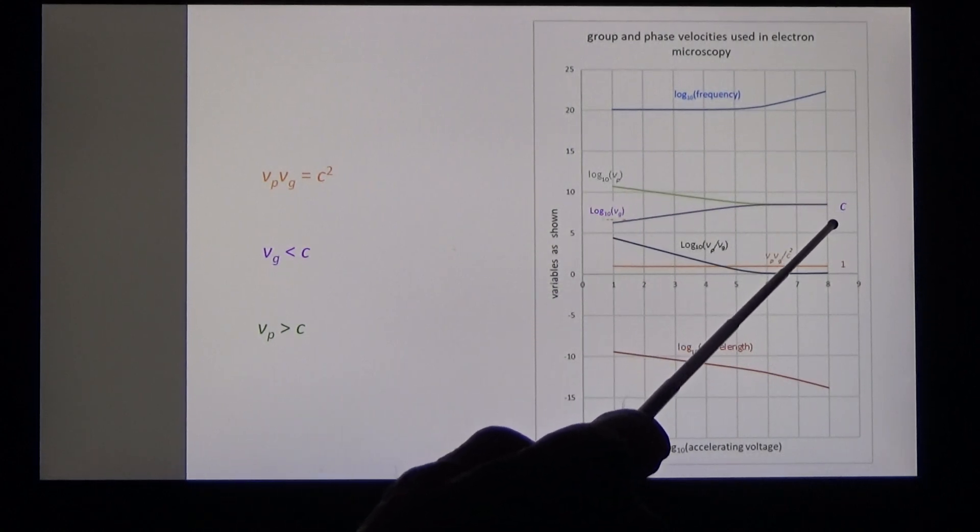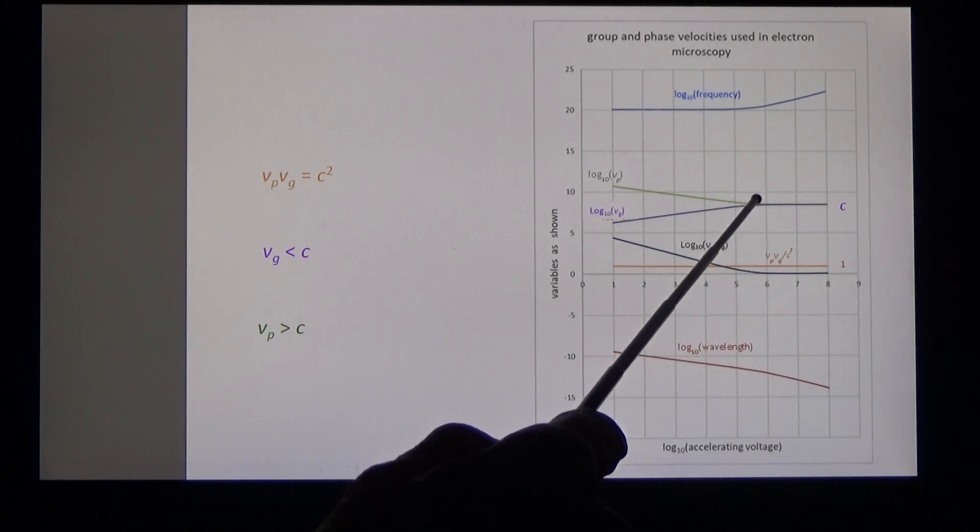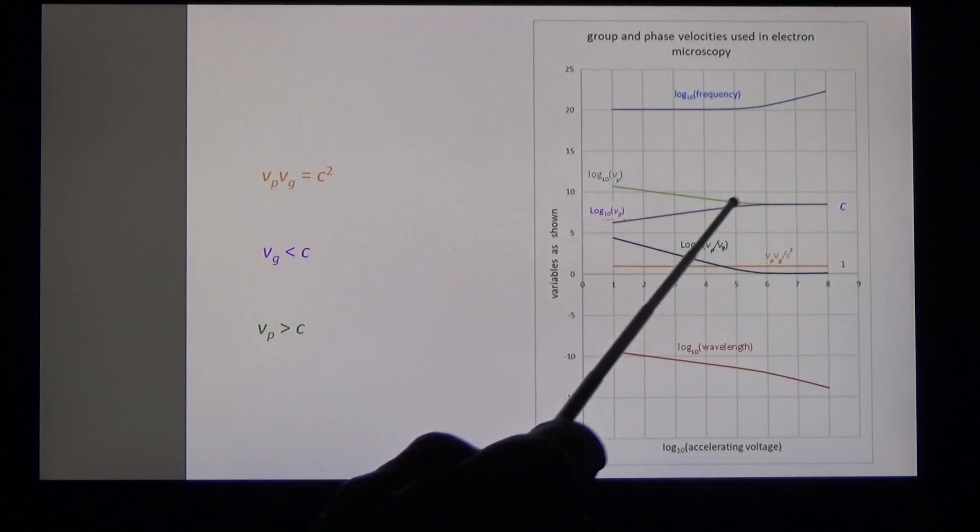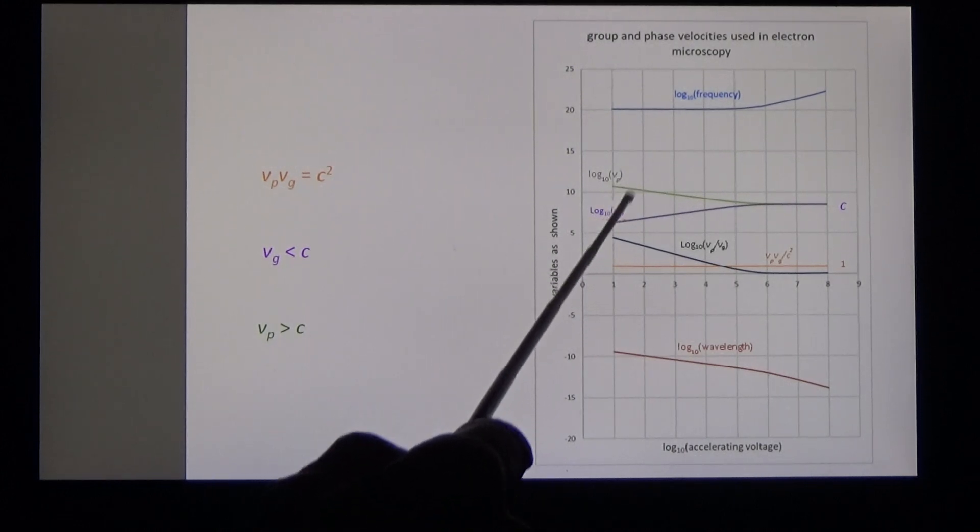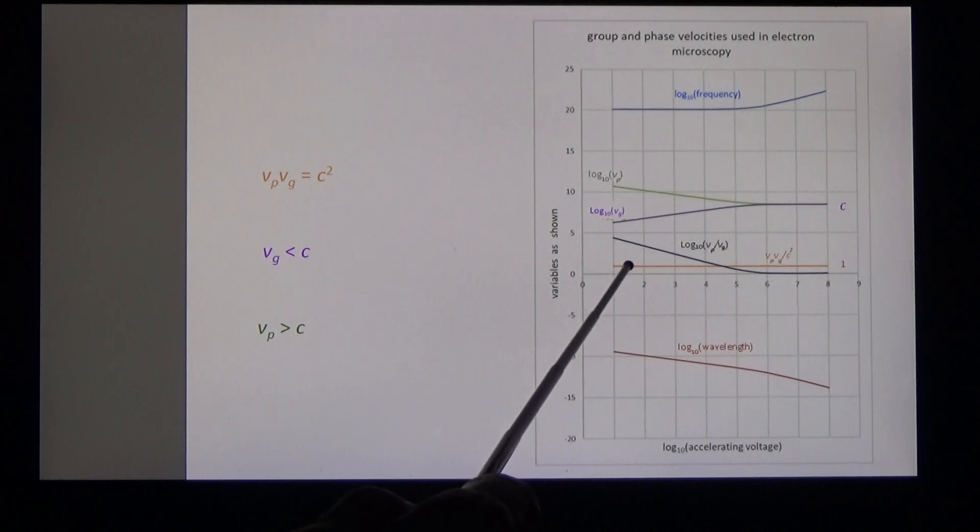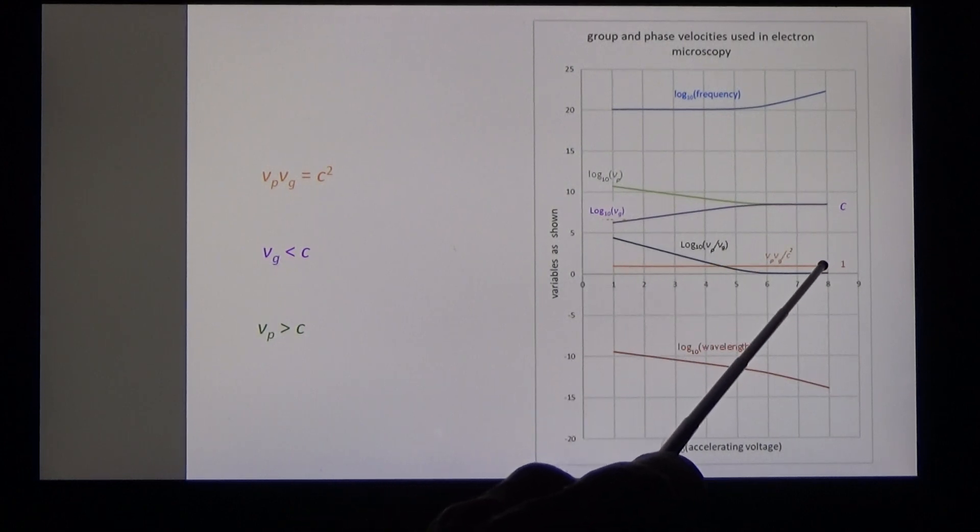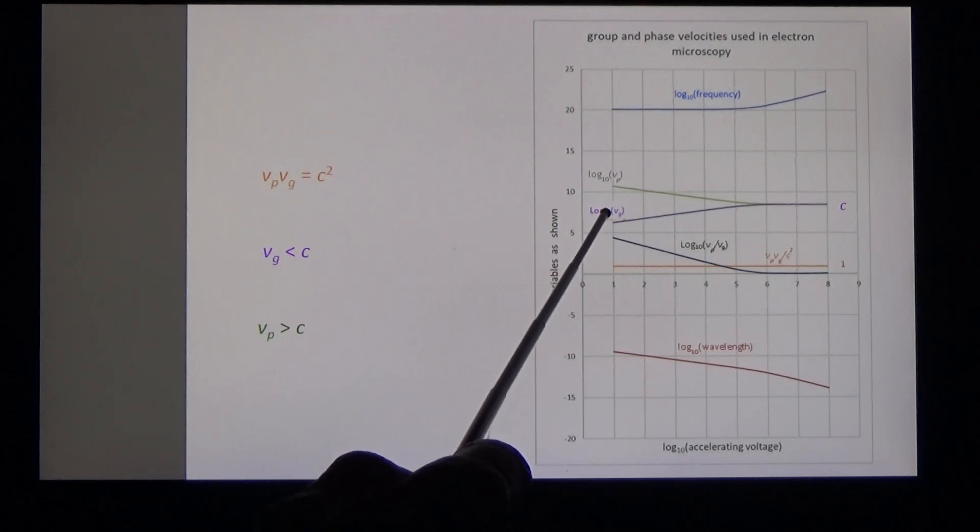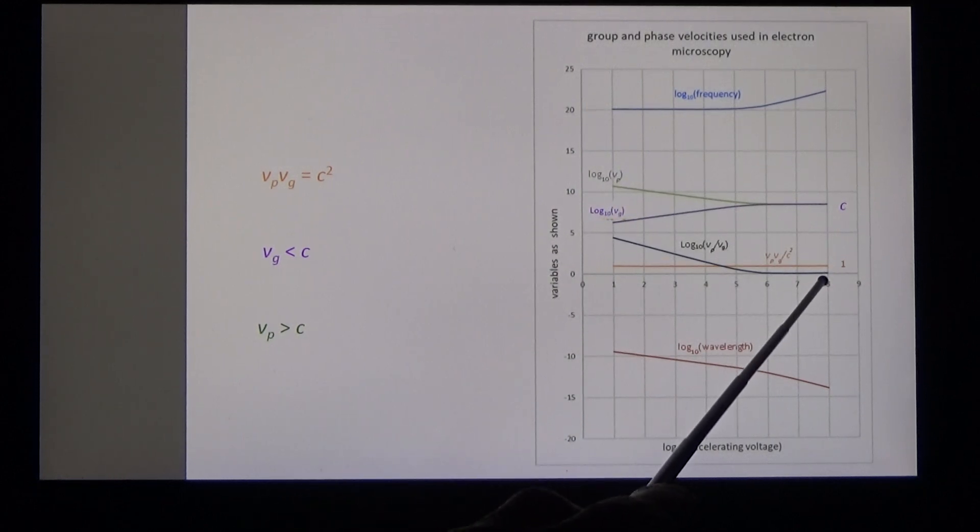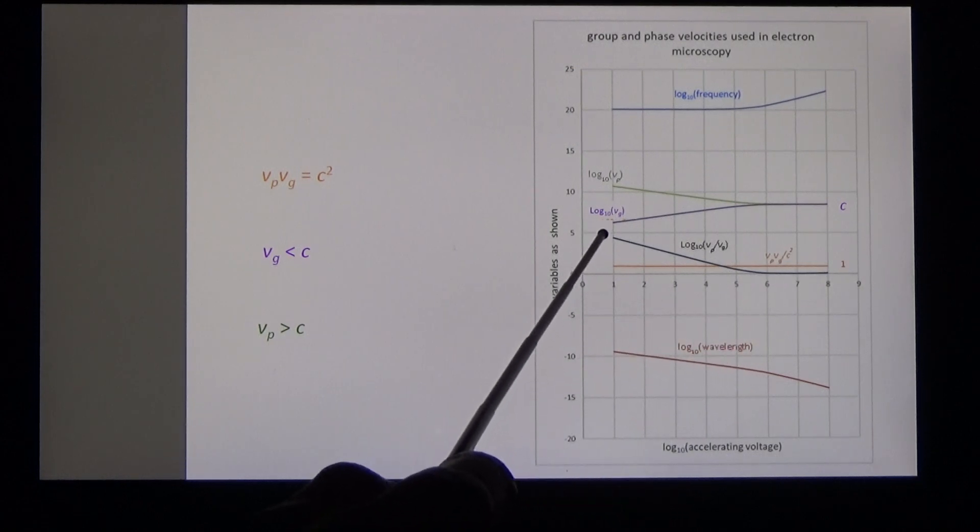The group velocity is the inverse of the phase velocity, less than c. And it tends to 0 as the wavelength gets very large. The product of these two is 1, as we saw in the table. And the ratio of phase velocity to group velocity is equal to 1 at high energy and increases as the energy gets lower.